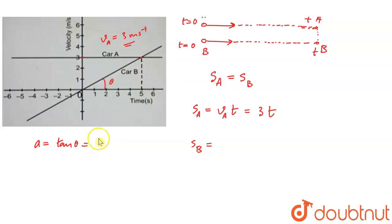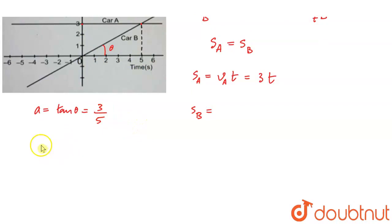The perpendicular is 3 and the base is 5, so 3 divided by 5. Acceleration equals 3/5 meters per second squared.